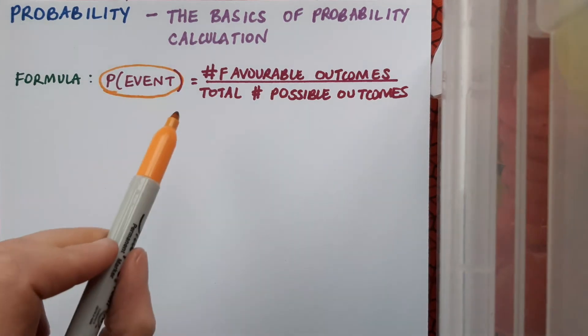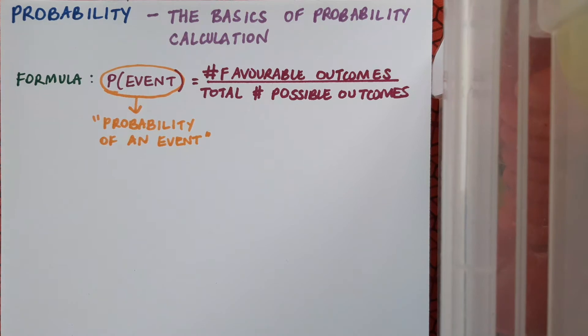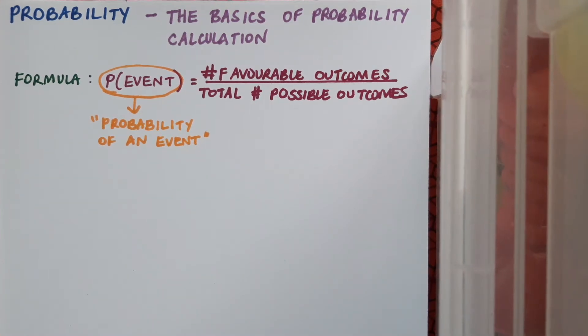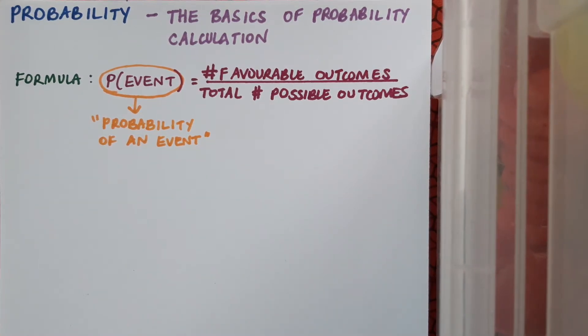If this notation here on the left is new to you, just note that it really means the probability of an event. It's just a notation shorthand for writing that down.